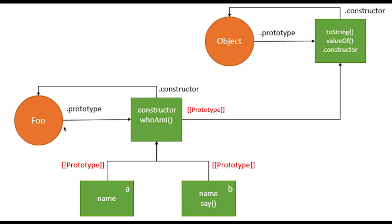We were also talking about proto bracket proto — it is a reference providing access to __proto__. Foo is a function, this is foo's prototype, and its constructor will point back to the prototype. Objects a and b have their proto pointing to the prototype of this foo function. Further, the prototype of this function will point to the Object prototype — if you do prototype prototype, that represents __proto__ pointing to the Object prototype.